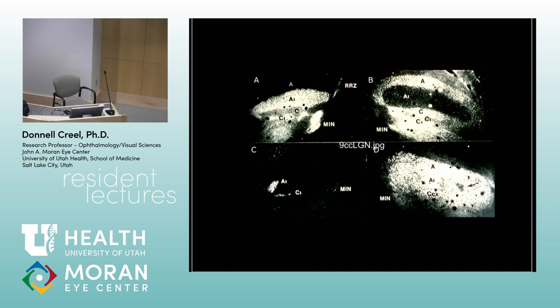Here is the geniculate with its layers. The upper right shows the layers of a normal cat; on the left is an albino cat. These are the uncrossed fibers in the albino cat, and here is the small pocket of uncrossed fibers in the crossed geniculate. All the rest of those geniculate layers, unlike the normal cat, are crossed. So albino cats are probably 99% crossed.